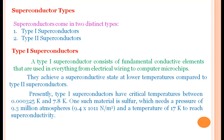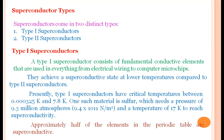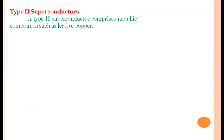One such material is sulfur, which needs a pressure of 9.3 million atmospheres and whose critical temperature is 17 Kelvin. Approximately half of the elements available in the periodic table are superconductors.